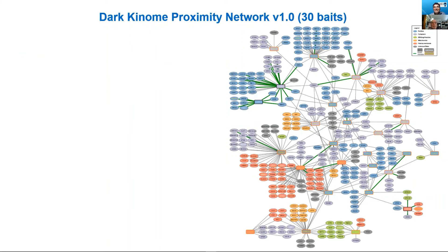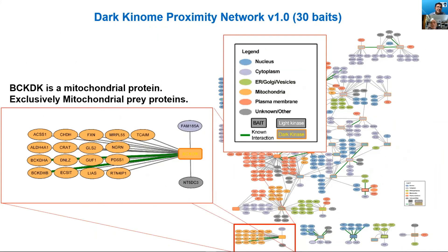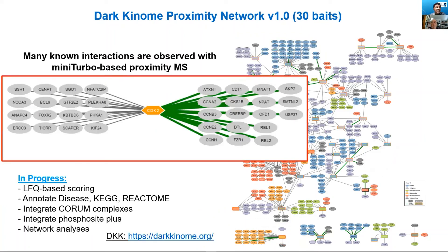Since these proximity networks reflect subcellular localization, the bait and prey proteins would be expected to be present in the same compartment. For example, CDK19 is primarily localized to the nucleus, while another CDK is mainly plasma membrane-associated. Baits like BCKDK, which are specifically localized to mitochondria, will identify mitochondrial proteins as well as their endogenous substrates. We have also incorporated positive controls including CDK2, where many known database interactions are recovered.